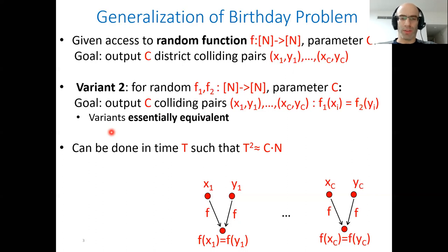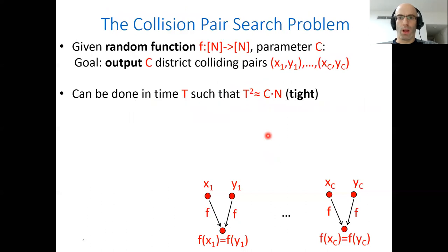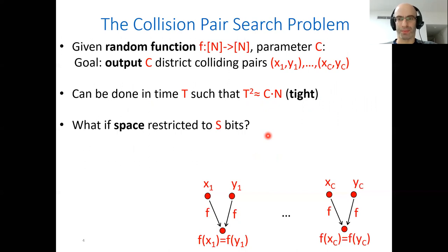What do we know about this problem? Basically it can be solved in time t such that t squared is about c times n. Notice that if you plug in c equals 1, you get back the birthday complexity. These parameters are actually known to be tight and this is a generalization of the birthday bound.